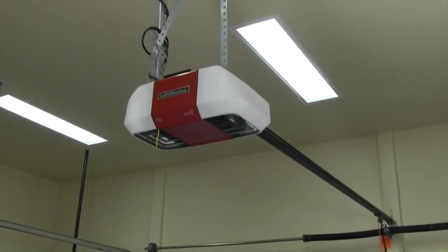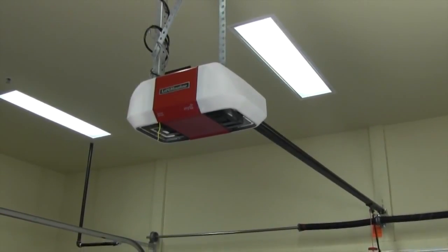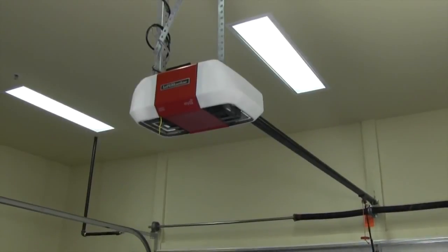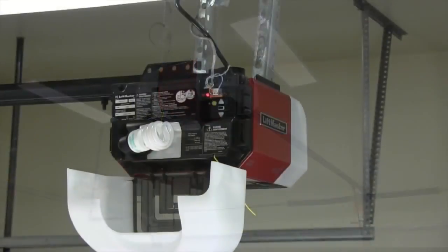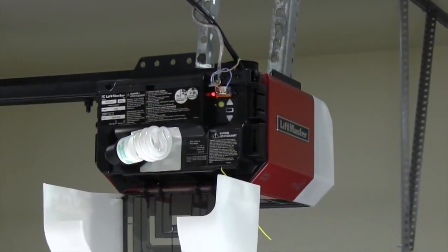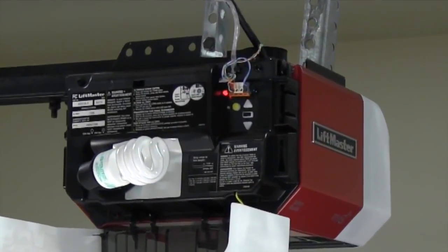Some garage door openers come with a battery backup system. The battery will typically need to be replaced every one to two years. The garage door opener will beep and the battery status LED will turn red to indicate the battery needs to be replaced.